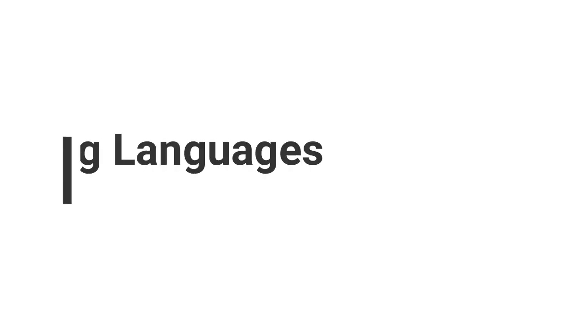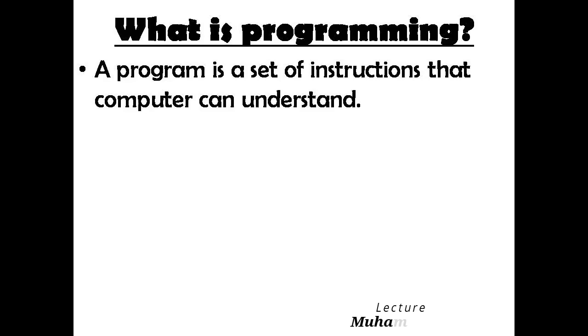Chapter name is Programming Languages, chapter number seven, page number 53. A program is a set of instructions that a computer can understand. A software and a program are the same thing — both refer to a set of instructions that a computer can understand. We use so many programs in our computer.